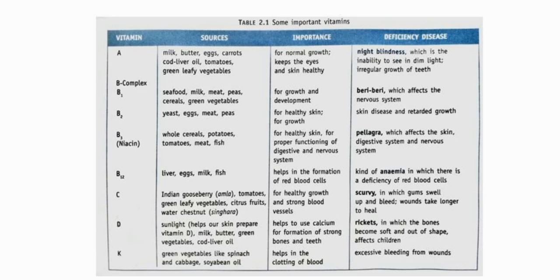Next is Vitamin B1. The sources are seafood, milk, meat, peas, cereals, and green vegetables. Vitamin B1 is important for growth and development. The deficiency disease is beriberi, which affects the nervous system.